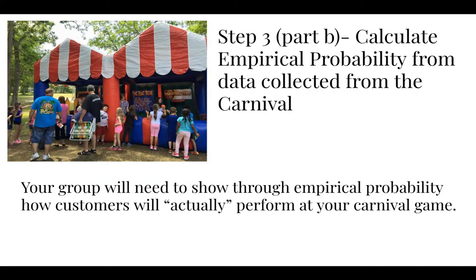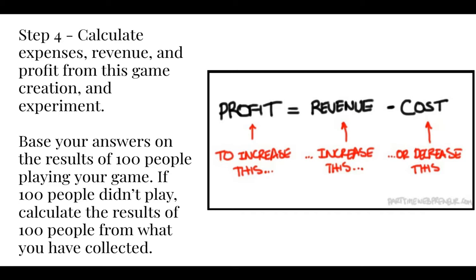Step three, part B: calculate the empirical probability from the data collected at the carnival. Your group will need to show, through empirical probability, how customers actually perform at your carnival game — just count who won and who lost and what they won. From that information you can determine exactly how much profit you made, because prizes cost money, building the game costs money, you collect money from players, and whatever you make you subtract your expenses.